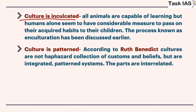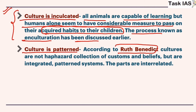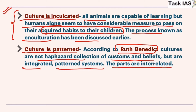Culture is inculcated — all animals are capable of learning, but humans alone seem to have considerable ability to pass on acquired habits to their children. The long gestation period and later long dependency of the child on the mother explain this. Culture is also patterned, according to Ruth Benedict: cultures are not haphazard collections of customs but integrated patterned systems, where different cultural traits are interrelated.